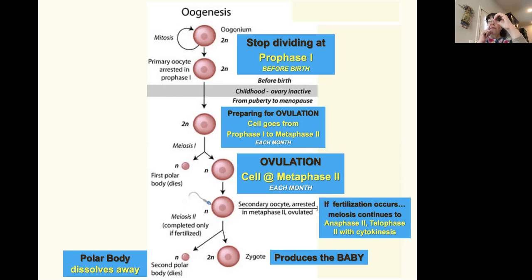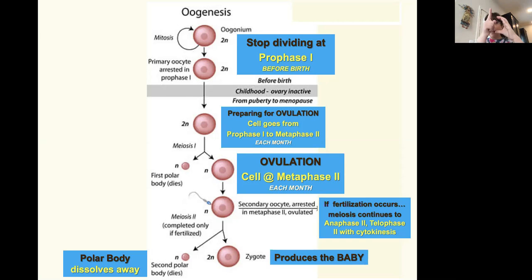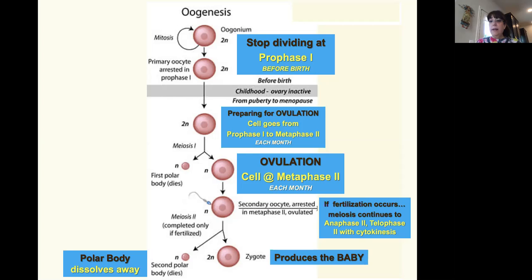Each month, one cell is ovulated — it leaves the ovary and goes into the uterus. If it's not fertilized, that cell is in metaphase two with all the chromosomes lined up. The homologues are already separated, so it's just chromosomes one through twenty-three sitting in the middle.